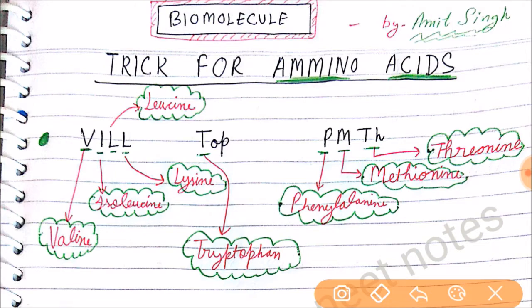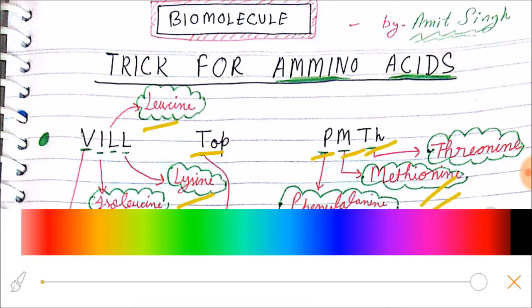The first trick for biomolecules is for essential amino acids — how can you remember all of them. Our trick is built around 'PMTHBILT': B for valine, I for isoleucine, L for lysine, L for leucine, T for tryptophan, P for phenylalanine, M for methionine, and TH for threonine. This is how you can remember all the essential amino acids.